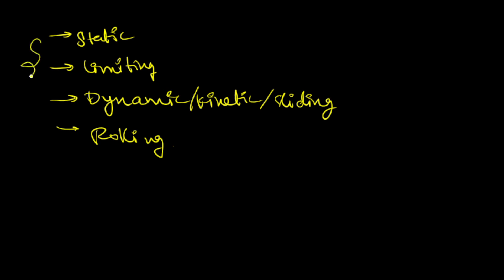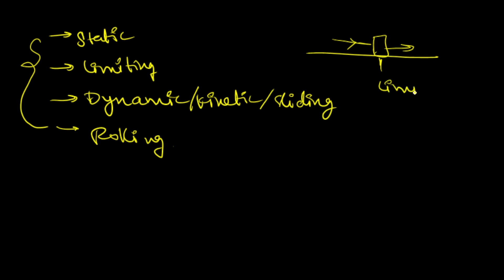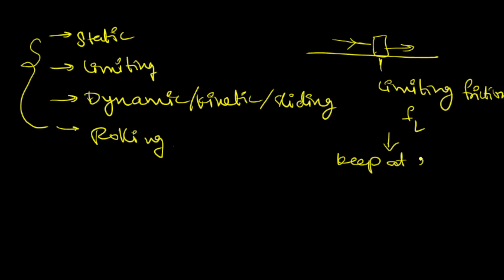I will give definitions for each and every type. The object starts moving at a certain limit — that limiting point is called limiting friction, which is denoted with FL. The friction which helps the body to keep at rest is known as static friction, denoted with FS.